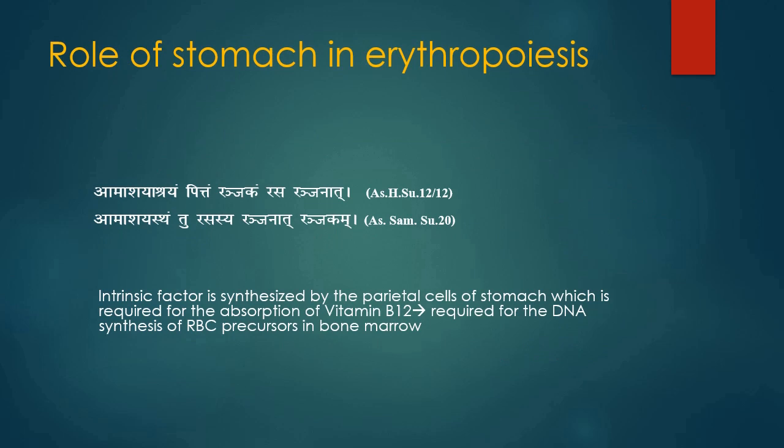Role of Stomach in Erythropoiesis: Vagbat has mentioned the stomach as the site of Ranjak Pith, which is responsible for the colouring of Rasa. It means he was aware of the role of the stomach in erythropoiesis, because the intrinsic factor is synthesized by the parietal cells of the stomach, which is required for the absorption of vitamin B12, needed for DNA synthesis of RBC precursors.